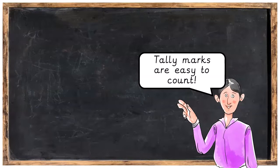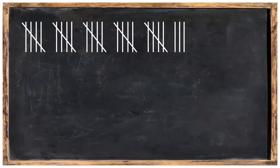Now tally marks are also really easy to count. Let's count these by skip counting in 5s. Here we've got 5, 10 altogether, 15, 20, 25, 26, 27, 28. Easy.